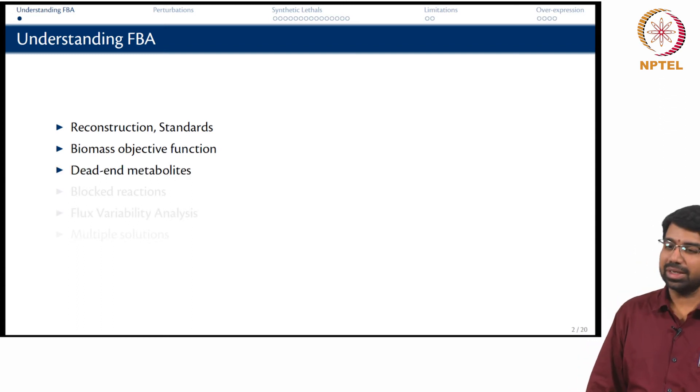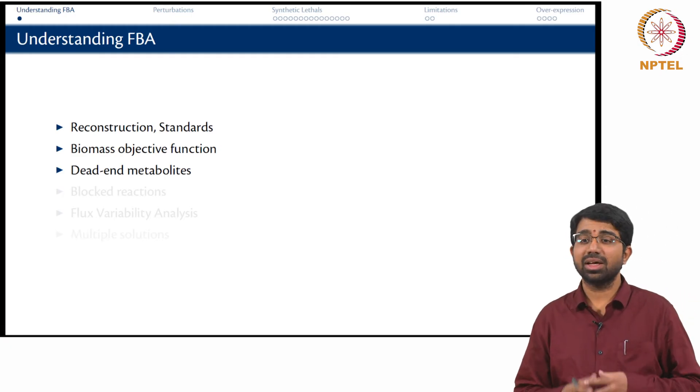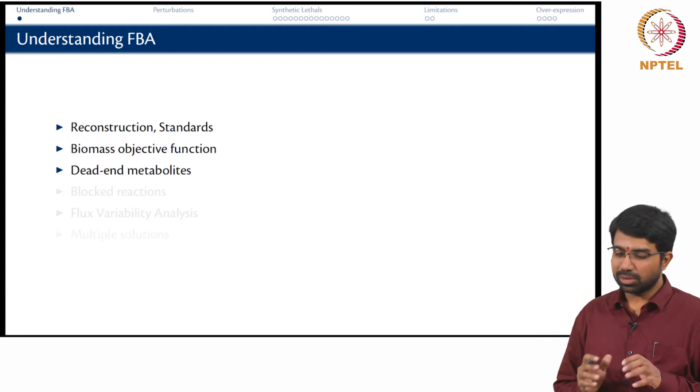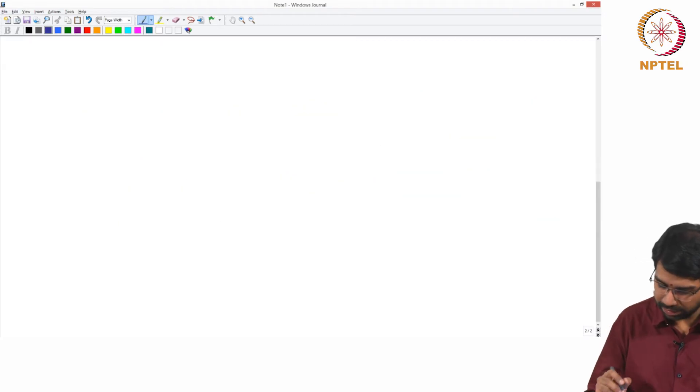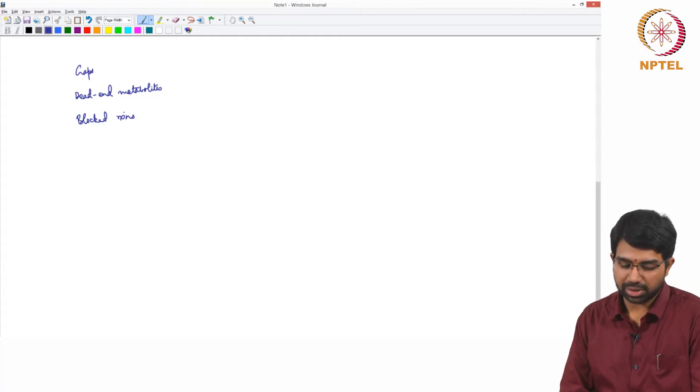And the next very interesting aspect of flux balance models is there are dead-end metabolites. There are 2 kinds of dead-end metabolites, there are 2 things you need to understand. You need to worry about gaps. Gaps and blocked reactions, gaps, dead-end metabolites and blocked reactions.